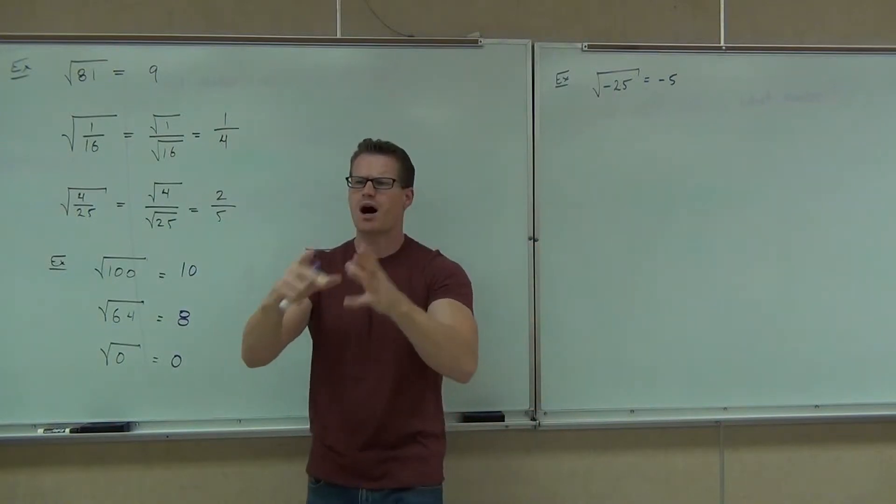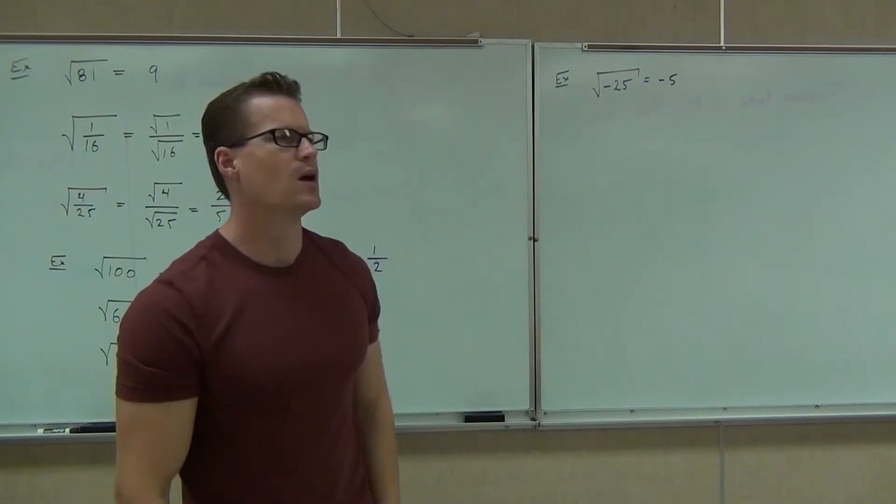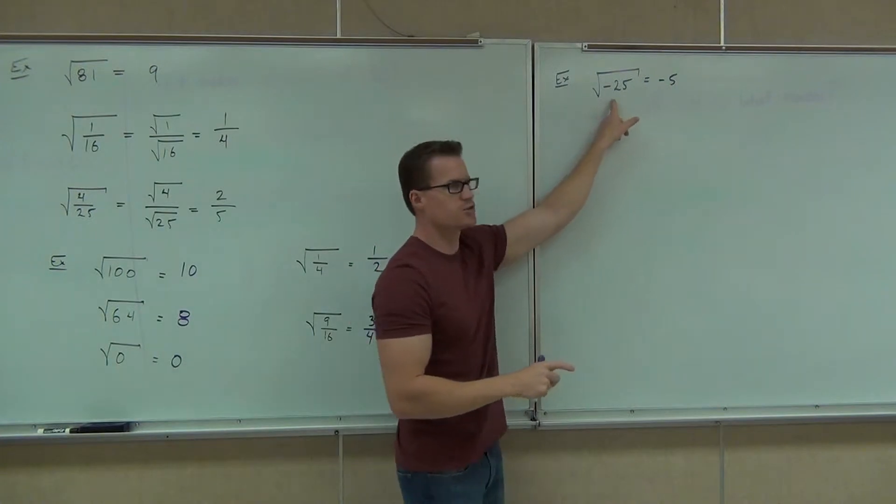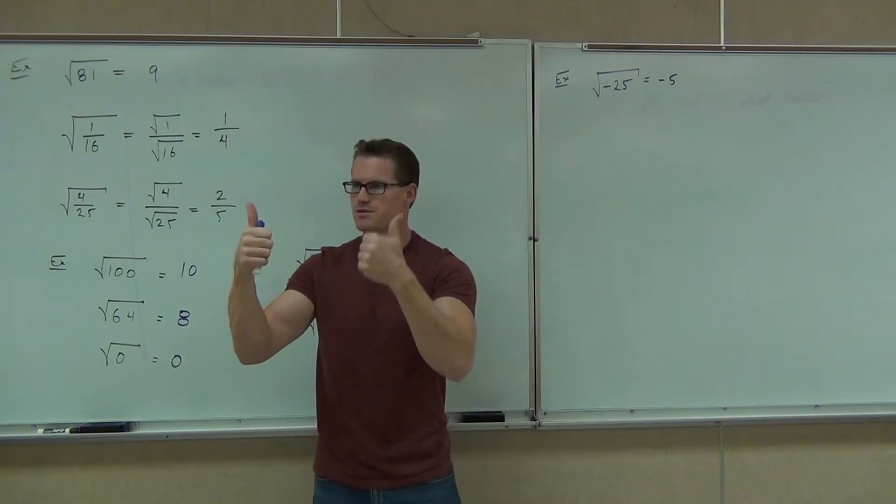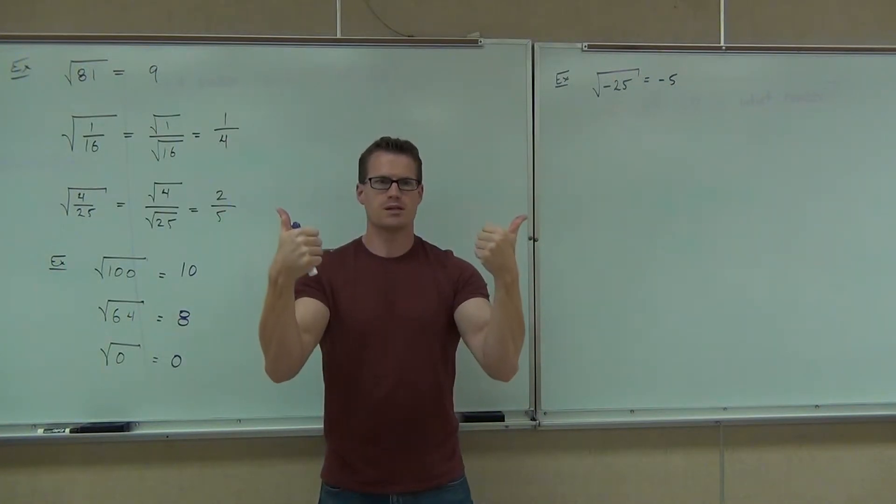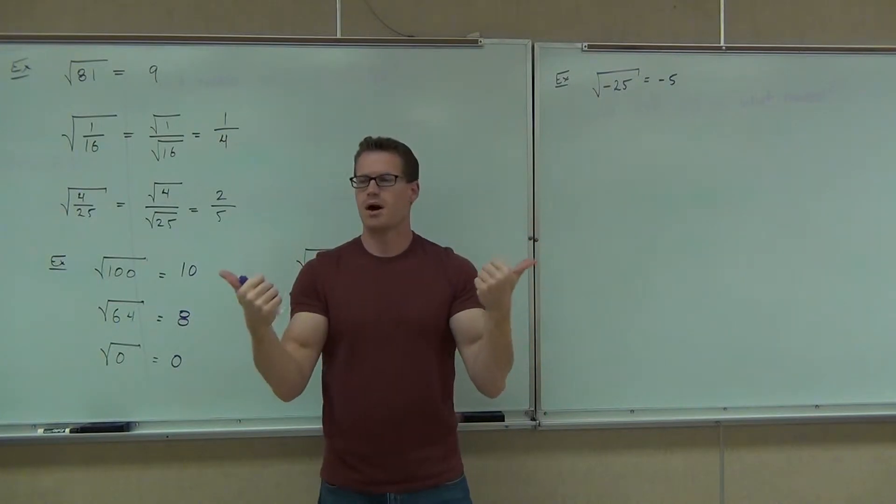What number times itself? Because we're squaring, right? The opposite of squaring a number. Saying what number times itself gives you negative 25? Well, if you have a positive times a positive, you get a positive.